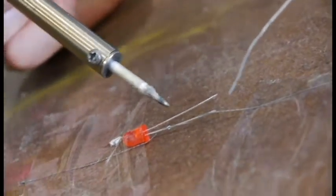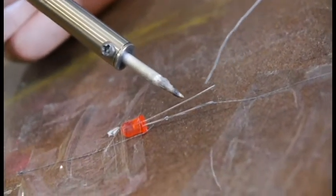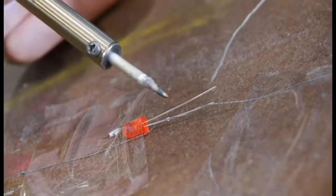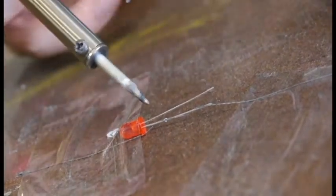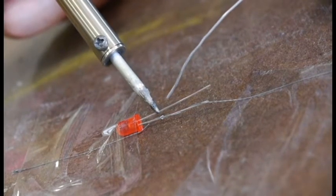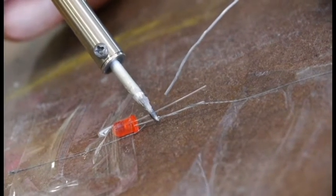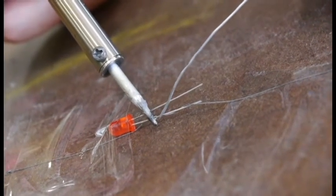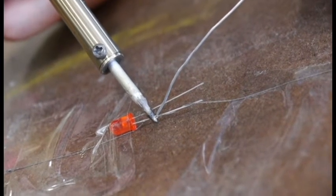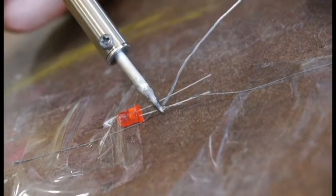Now, with this particular component, you want to be careful. You always want to heat up the arm of the component, not the solder itself. Unfortunately, too much heat to an LED is not a good thing, but we're going to be careful here. We're going to heat that up. And we're looking for where it touches the leg of the LED.